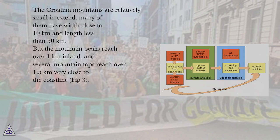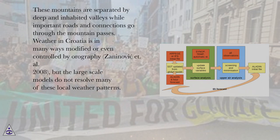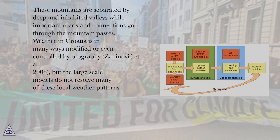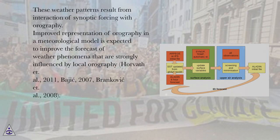The Croatian mountains are relatively small in extent; many of them have a width close to 10 kilometers and a length less than 50 kilometers. But the mountain peaks reach over 1 kilometer inland, and several mountain tops reach over 1.5 kilometers very close to the coastline (Fig. 3). These mountains are separated by deep and inhabited valleys, while important roads and connections go through the mountain passes. Weather in Croatia is in many ways modified or even controlled by orography (Zaininovich et al., 2008), but large-scale models do not resolve many of these local weather patterns, which result from interaction of synoptic forcing with orography.